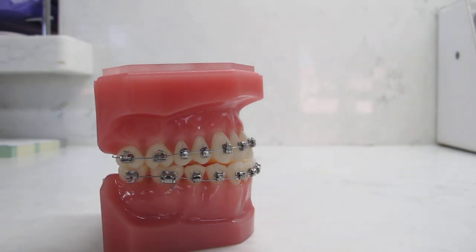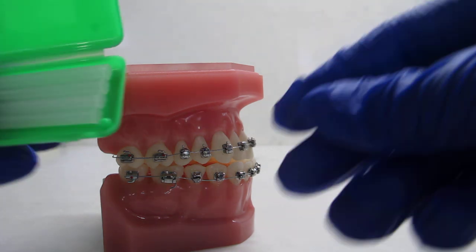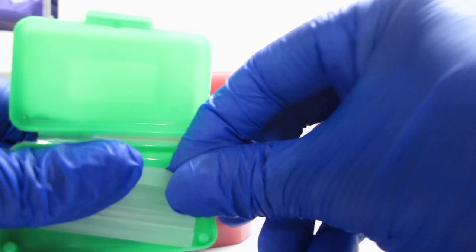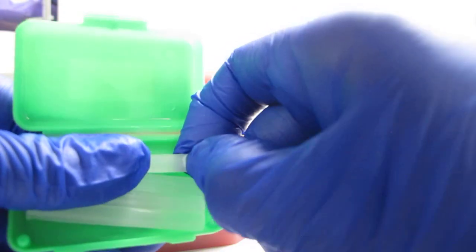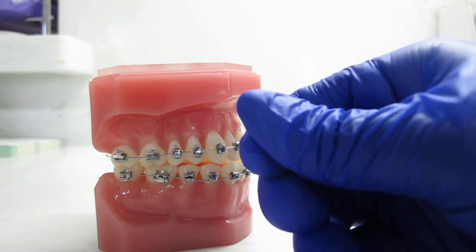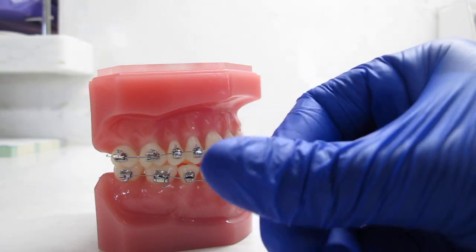How to use orthodontic wax. Take the wax that was provided, pinch a small piece off, and roll it between your fingers to warm it up.